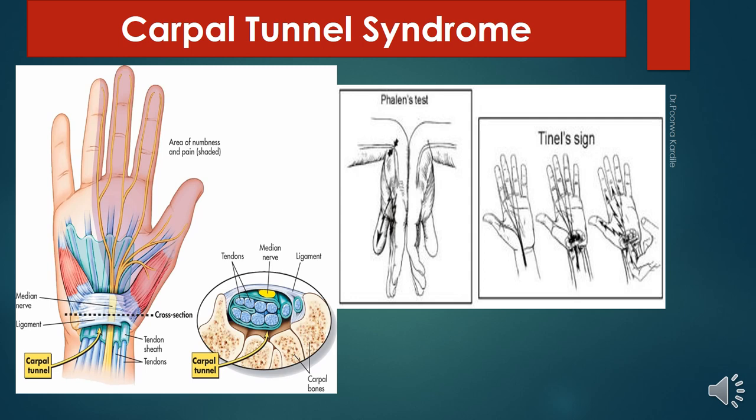This slide shows compression of the median nerve in the carpal tunnel. The carpal tunnel is an osteofibrous tunnel between the carpal bones and the flexor retinaculum of the wrist. This restricted space provides passage to long flexor tendons with their synovial sheaths, and the median nerve also passes through it. Common causes of compression include tenosynovitis and bony encroachment as seen in osteoarthritis or lunate dislocation.